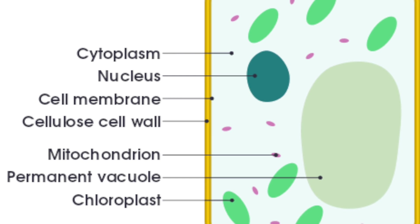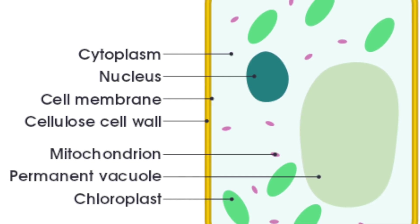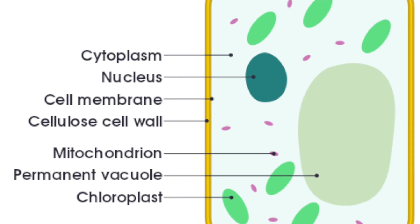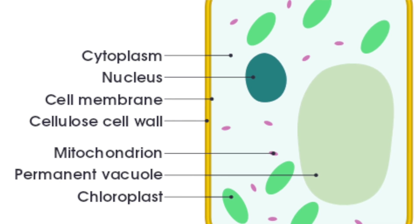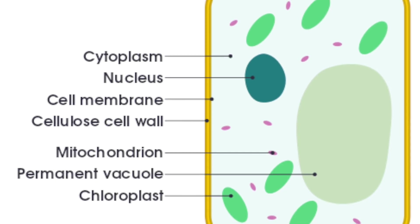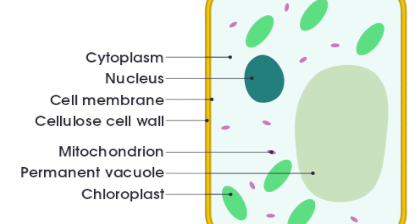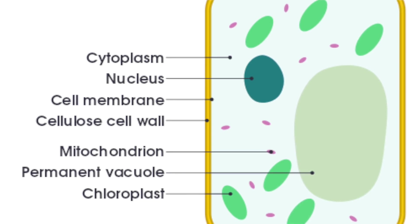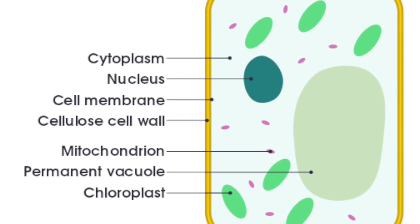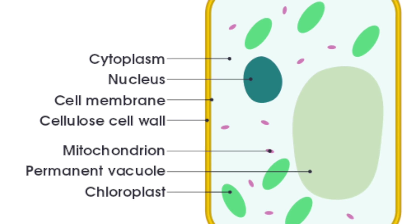There are also chloroplasts, which contain chlorophyll that is used for photosynthesis. Plant cells need to be able to do photosynthesis, whereas animal cells do not. And then finally there is also a permanent vacuole, and this keeps the cell rigid to support the plant.